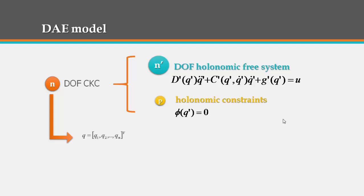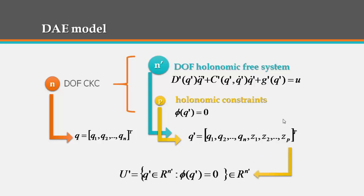In fact, q is the vector of the independent generalized coordinates of the constrained system. And q' is the vector of the generalized coordinates of the free system. This system is confined to the following set where constraints hold true.